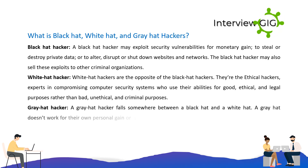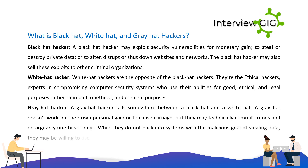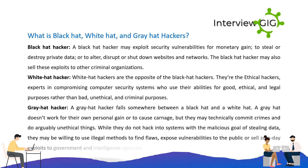A gray hat hacker falls somewhere between a black hat and a white hat. A gray hat doesn't work for personal gain or to cause carnage, but they may technically commit crimes and do arguably unethical things. While they do not hack into systems with the malicious goal of stealing data, they may be willing to use illegal methods to find flaws, expose vulnerabilities to the public, or sell zero-day exploits to government and intelligence agencies.